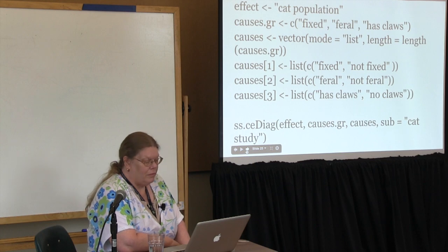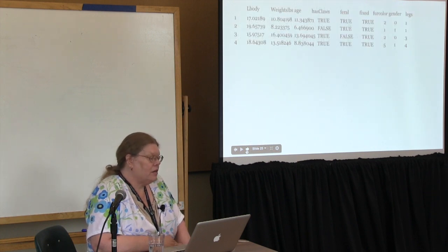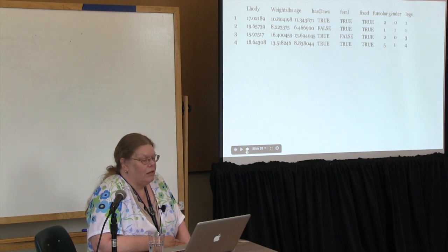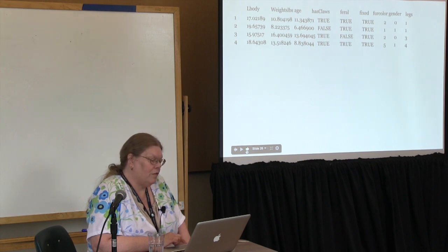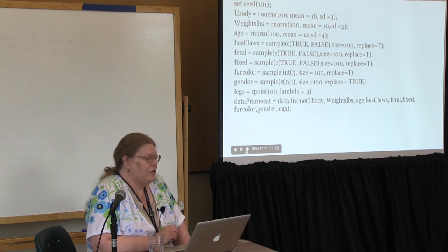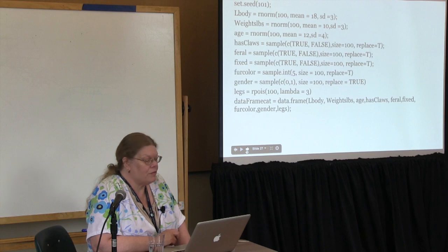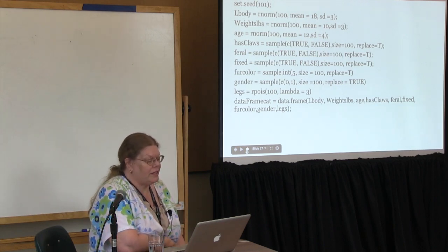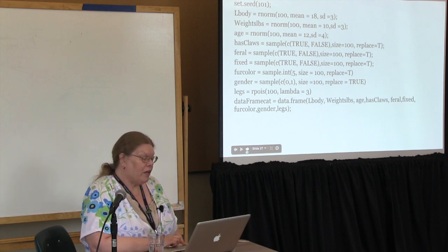This is the R code to make that diagram. The SSC diagram function at the bottom comes from the package Six Sigma. Here is the first four lines of my data set and data table in R from observing the cats. I have length of body, weight in pounds, age, whether or not they have claws, feral status, if they're fixed, fur color coded as numbers, gender as numbers, and how many legs they have. R has the ability to generate data sets with parameters such as distributions, so you can get sample data to test out your code or functions fairly close to real data.